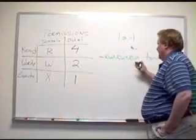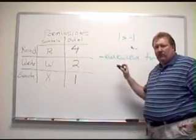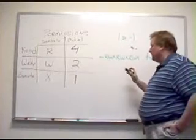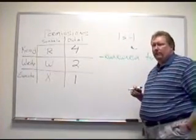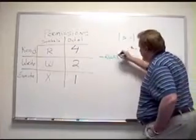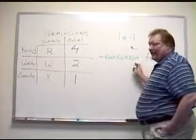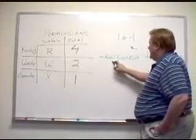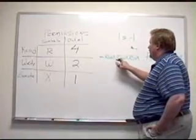Now the next group of characters you see are the actual permissions assigned to the file. And these are actually broken up into three different groups. If you notice, you've got nine characters in total with a repeating pattern of R, W, and X.